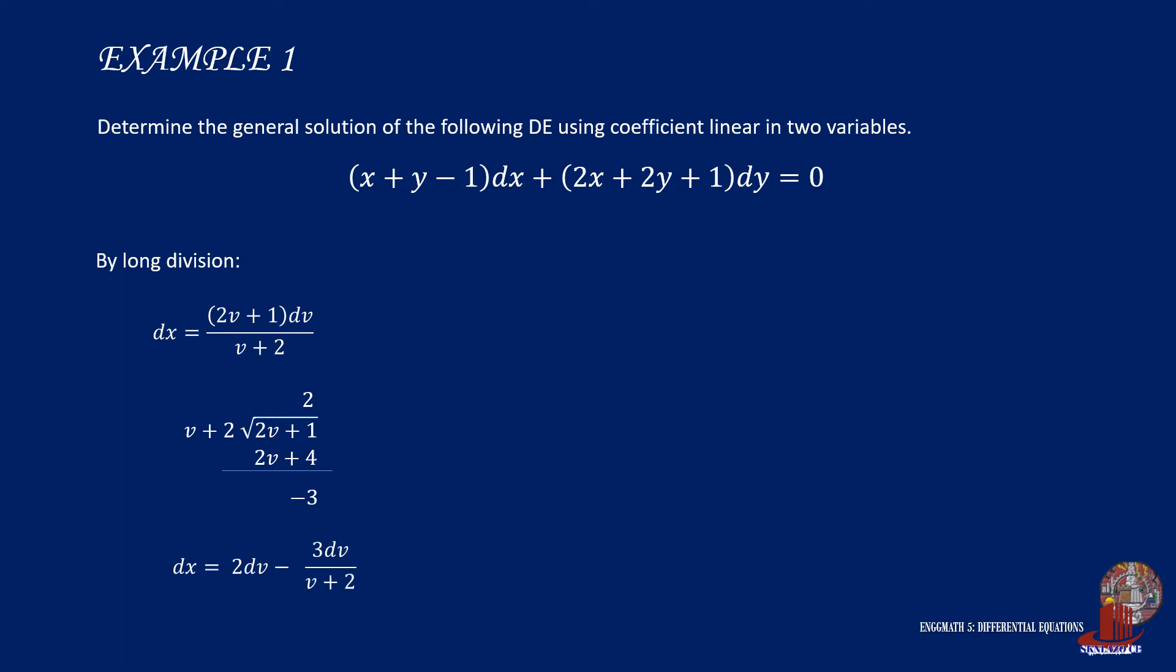So taking back the equivalent term, we get dx is equal to 2dv less 3dv all over v plus 2, which is ready to be integrated. So the integral of dx is x, which is equal to the integral of 2dv and that is 2v.